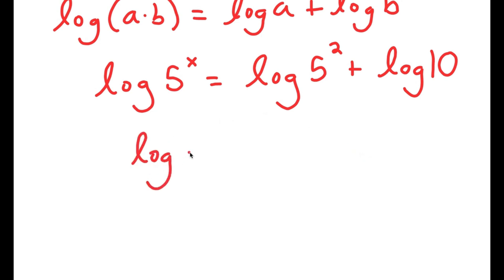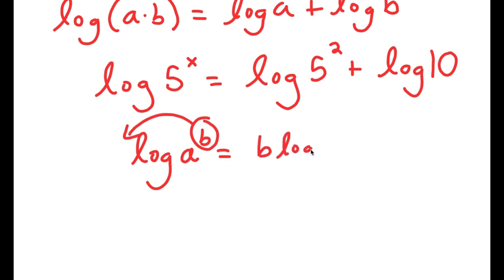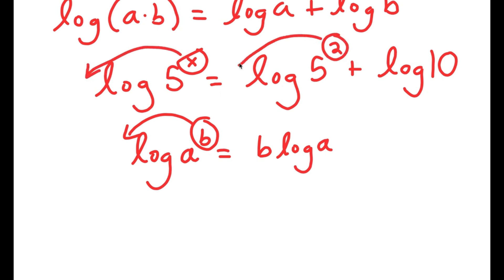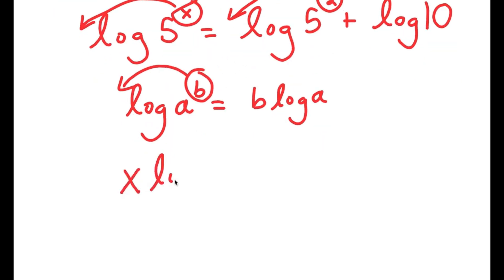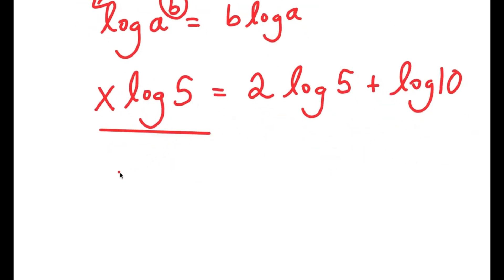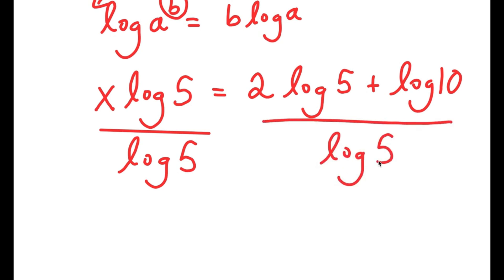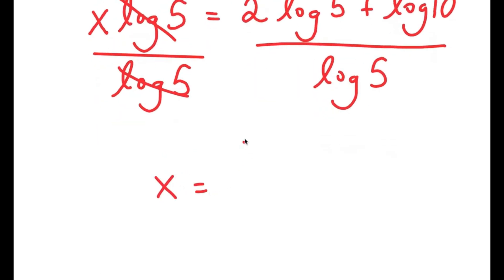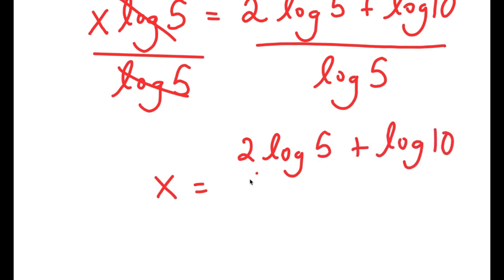So log of 5 squared times 10 is going to equal log of 5 squared plus log of 10. Now, if I have something in the form log a to the power of b, I can move this exponent b to the front, so this equals b times log a. So I have log 5 to the power of x — move x to the front — and log 5 to the power of 2 — move 2 to the front. I get x times log of 5 is equal to 2 times log of 5 plus log 10. Now I'm going to divide both sides by log 5, and I get x is equal to 2 times log 5 plus log 10 over log 5.